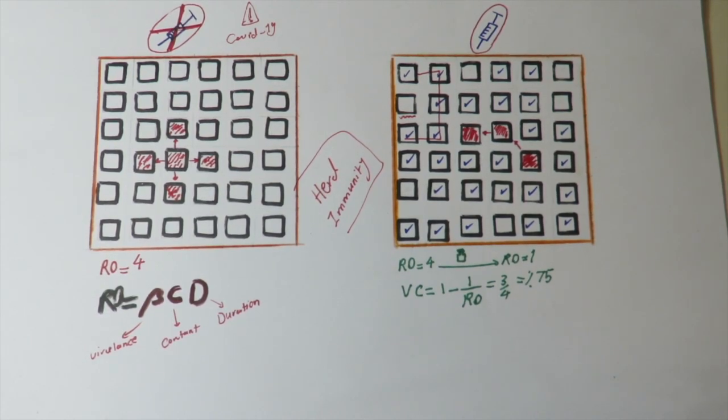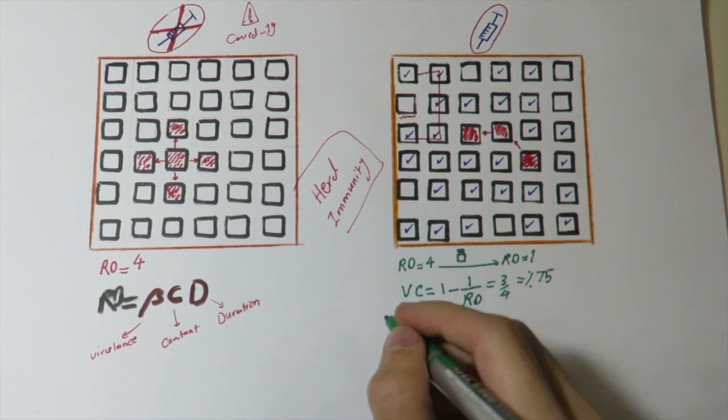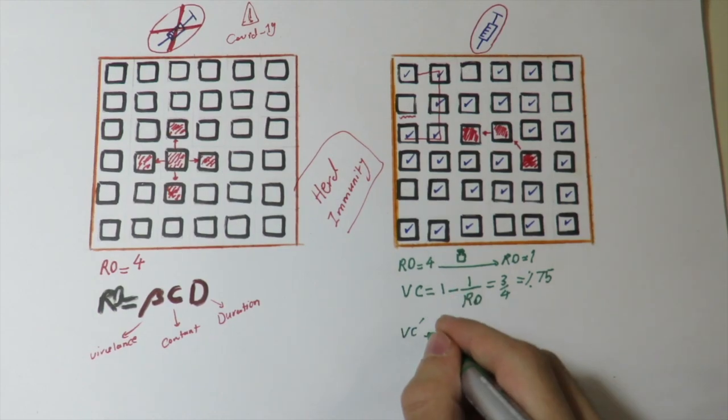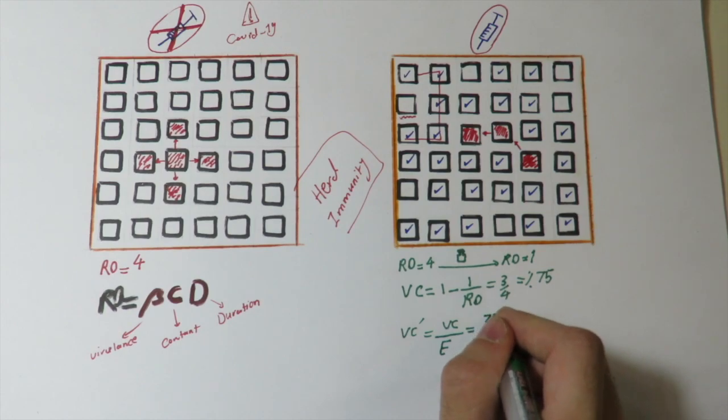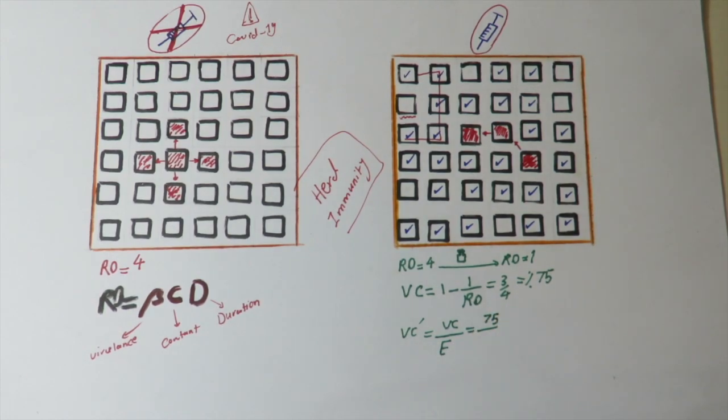So here, the vaccine coverage needed will be vaccine coverage in case of 100% effectiveness divided by your new effectiveness, which will be, for example, 75% divided by, in the case of a vaccine whose effectiveness is 90%, you will have something like this.